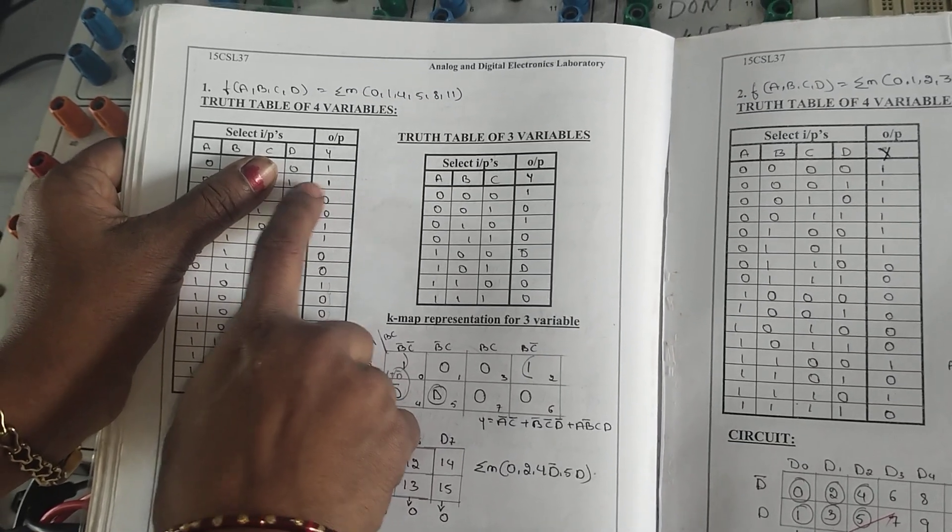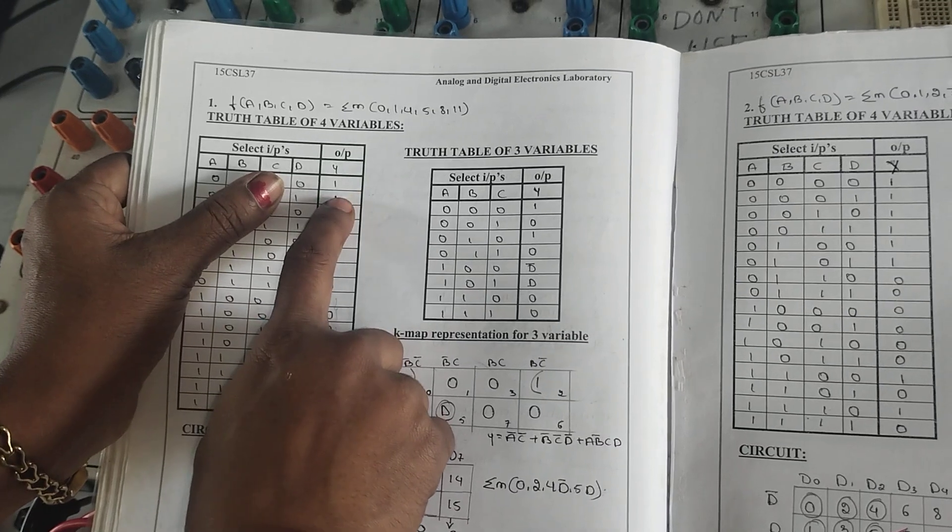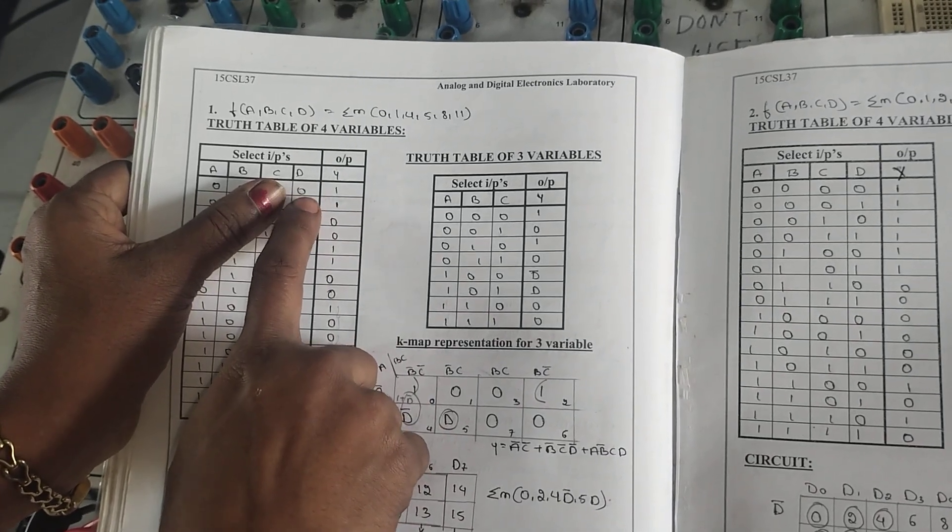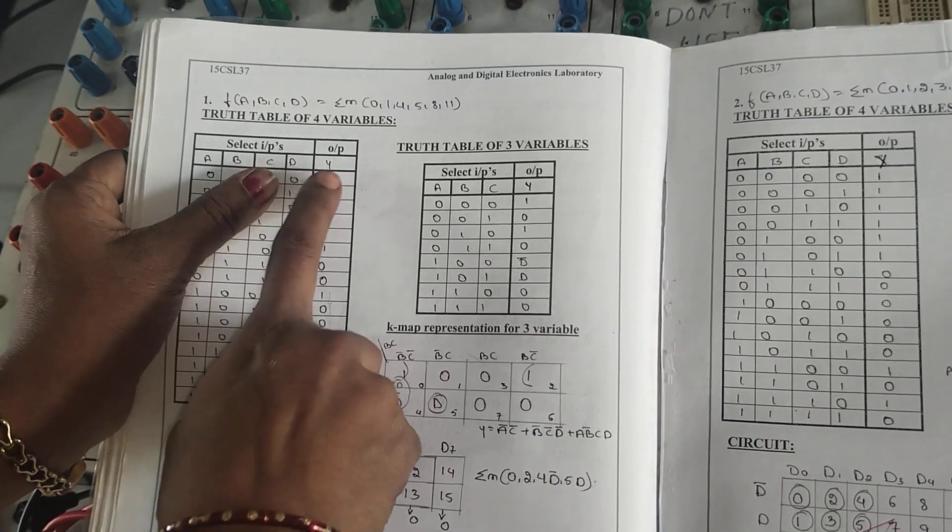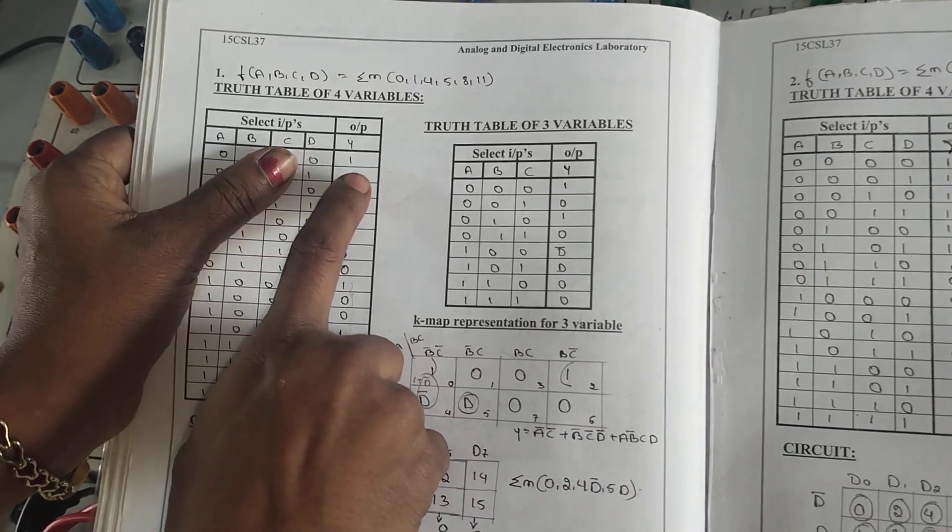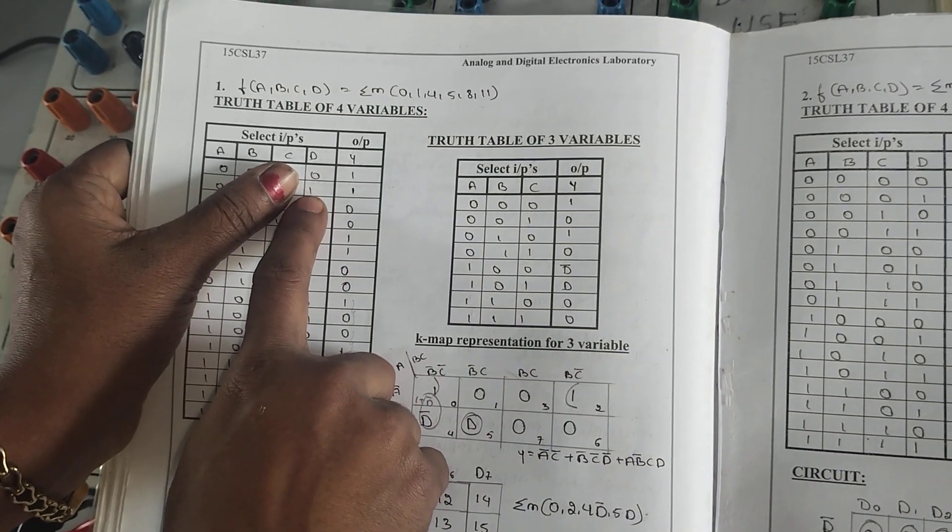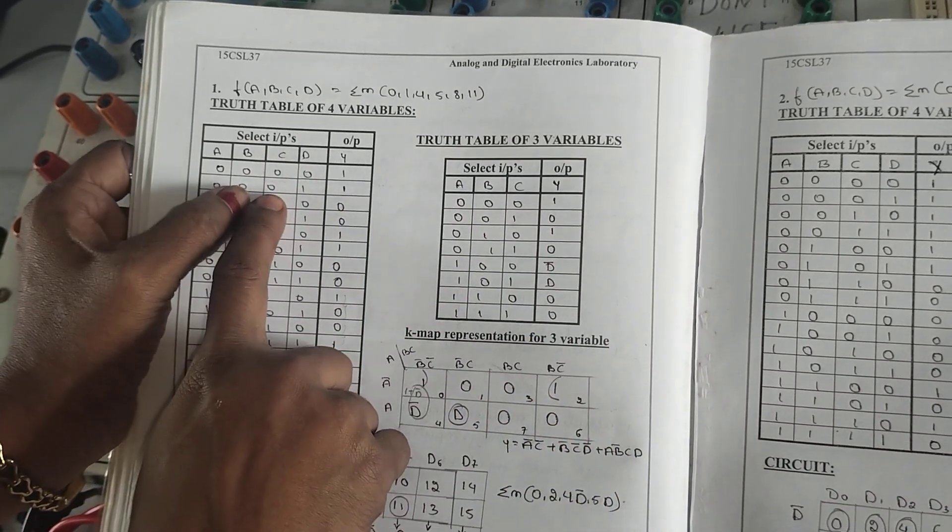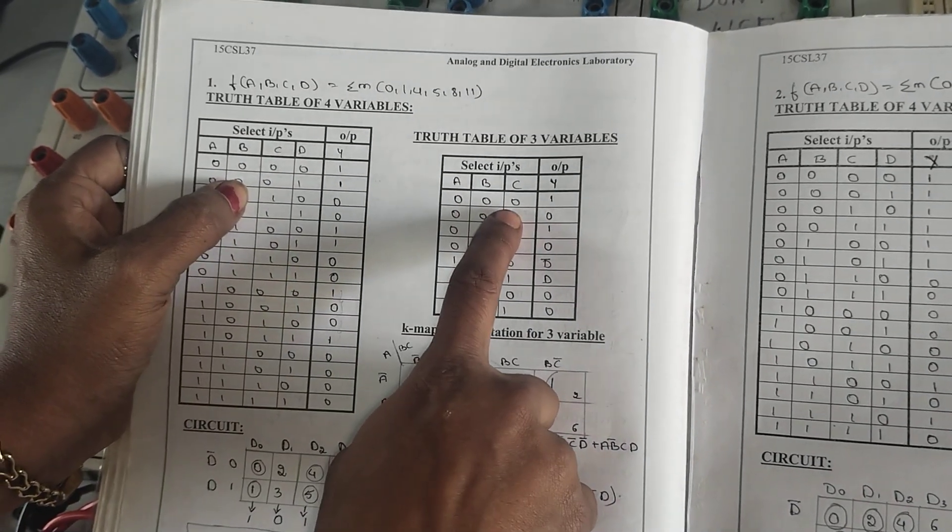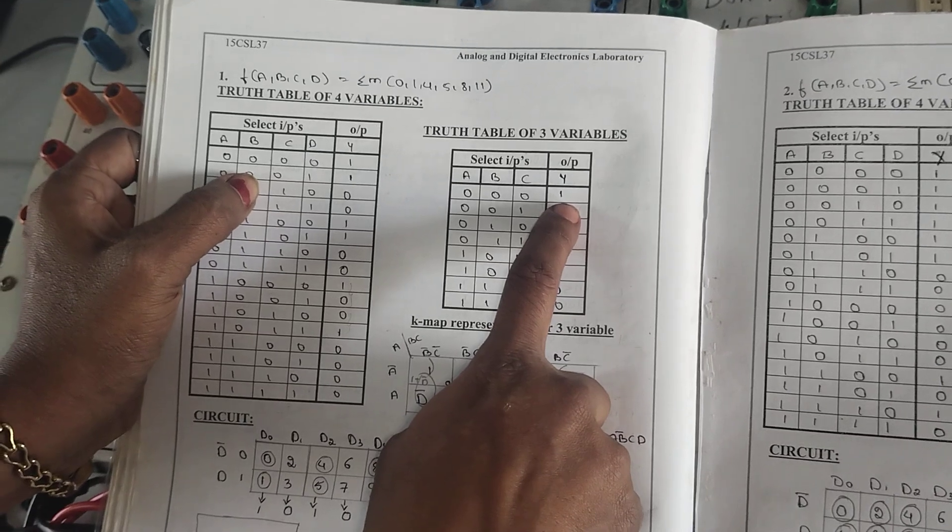And with respect to these inputs, I have to find out what is the output. See, whenever my D input is 0, the output is always 1. Whenever D input is 1, the output is always 1. What does this mean? The output is not dependent on any input. Then I can write my output as 1. These two are common, then I take only 1, 0, 0. I am representing output as 1.